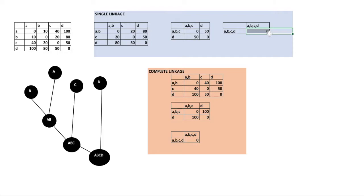Then we merge again until it becomes one cluster. If we want to see it in the dendrogram, A and B are merged into AB, then AB is merged with C to become ABC, and ABC is merged with D to become ABCD.